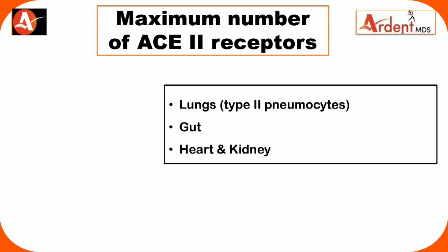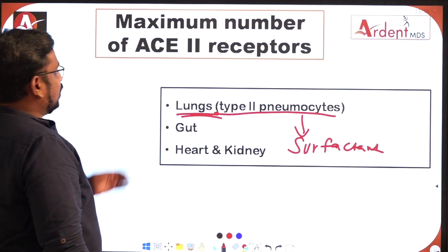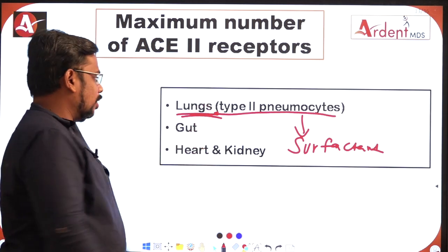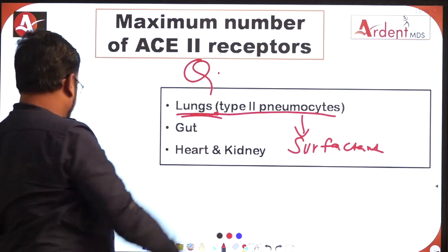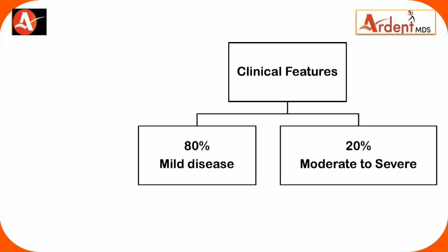The maximum number of ACE2 receptors are present especially in the lungs — specifically on Type 2 pneumocytes. Type 2 pneumocytes are responsible for surfactant synthesis. The gut, heart, and kidney also have maximum ACE2 receptors. This is one important multiple-choice question area.